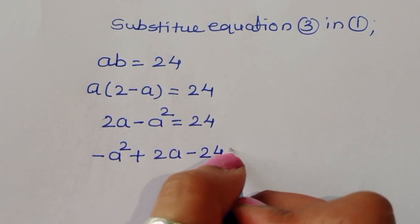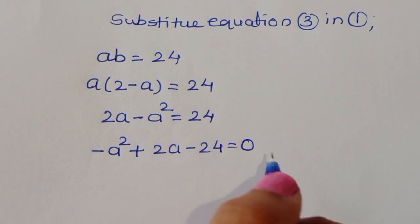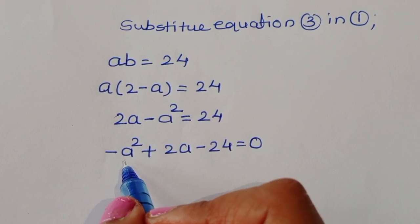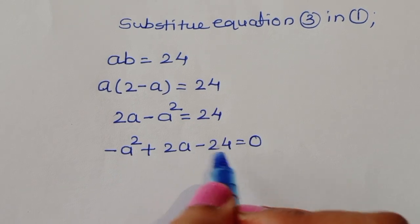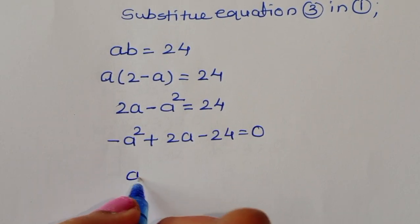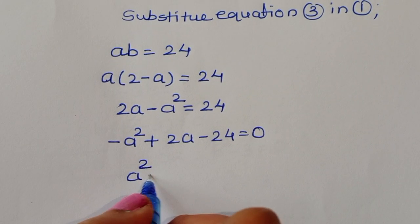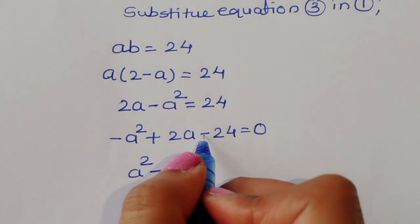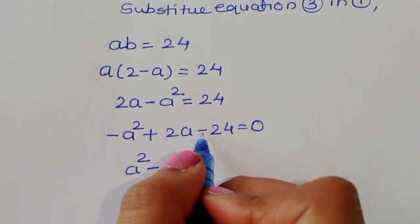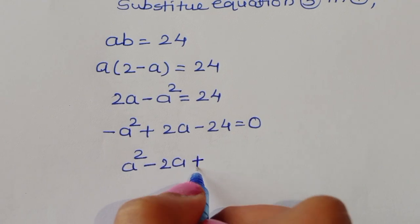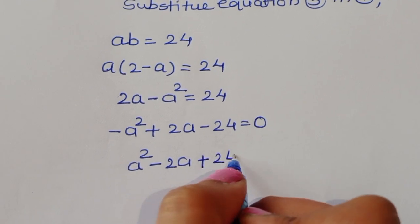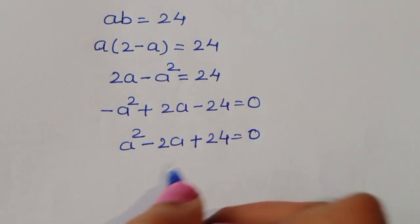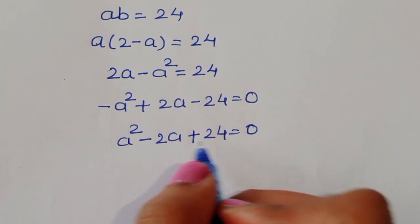We rewrite this as minus a squared plus 2a minus 24 is equal to 0. Multiplying through by minus 1, we get a squared minus 2a plus 24 is equal to 0.